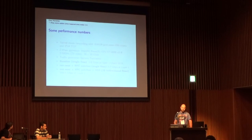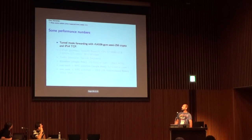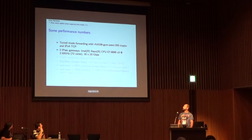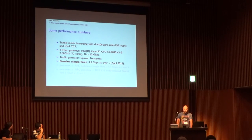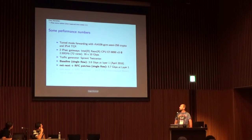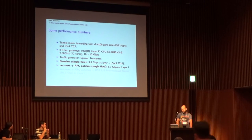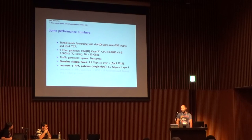Let's look at some performance numbers. I did tunnel mode forwarding tests with GCM-AES-I, IPv4 and GRO. My setup used two IPsec gateways with 72 cores each and 16 10-Gbit NICs, and a Spirent test center as a traffic generator. The baseline back in April was 3.8 Gbit/s for a single flow. Now, with recent NICs and the RFC patches I've posted, we get 5.7 Gbit/s for a single flow — almost 2 Gbit/s improvement, which is quite nice. The packet path is still not fully optimized, so there's more to gain.